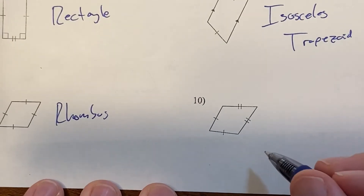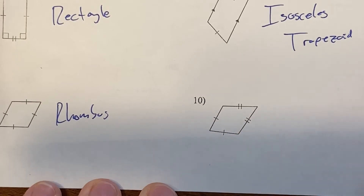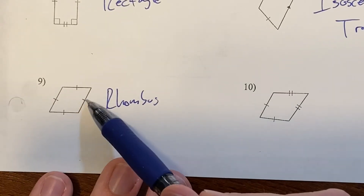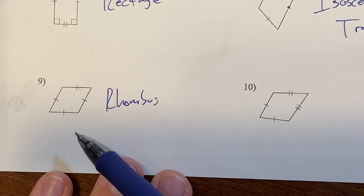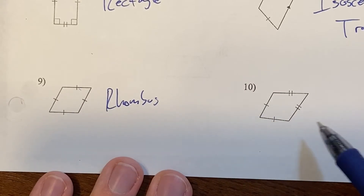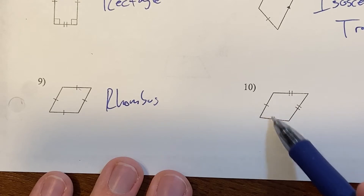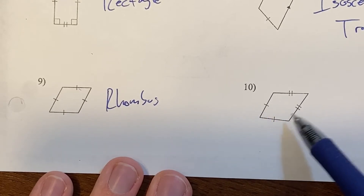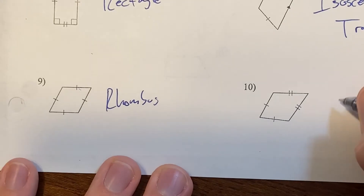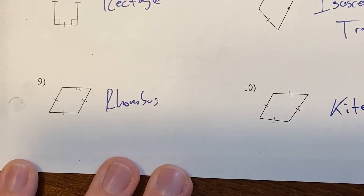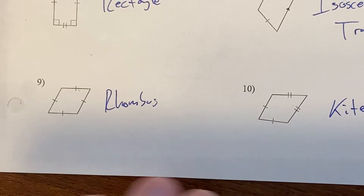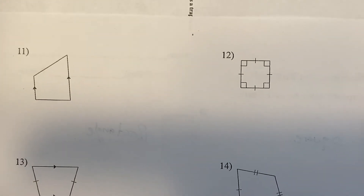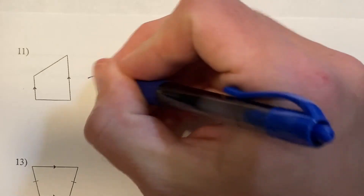This one has two sets of congruent adjacent sides. These have one tick mark meaning they're all the same, and these have two tick marks meaning these two are equal and these two are equal, but those two groups are not equal to each other — so this is a kite. It's important to be able to distinguish between a kite and a rhombus.